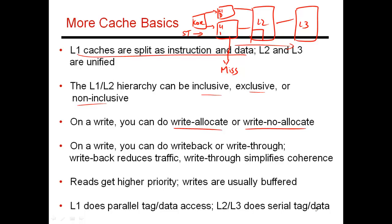Depending on the data access pattern, one of these two policies is going to perform better. Usually when I do a store, it means I'm kind of done with that data. Programs typically bring data into registers, do various computations, and when done, store the data back into memory. So a store usually means that this is the end of my temporal locality — I'm unlikely to use this data again. That argues for using a write no-allocate policy, because if I'm done with this data, why should I bring it into the L1?